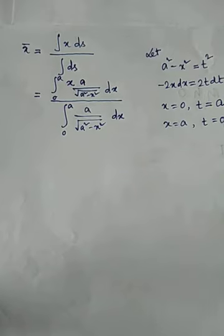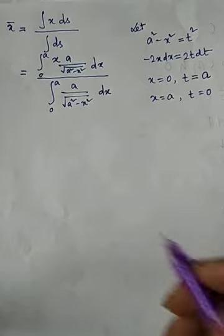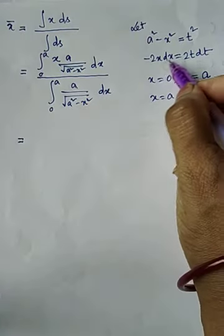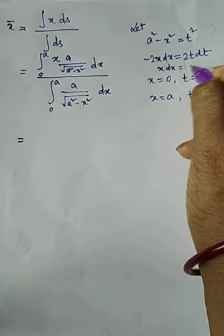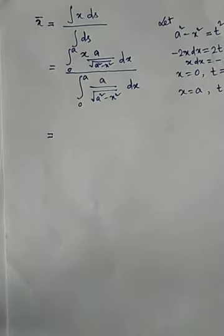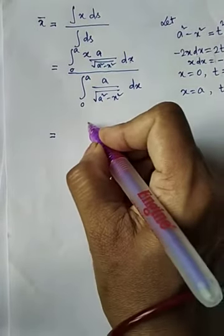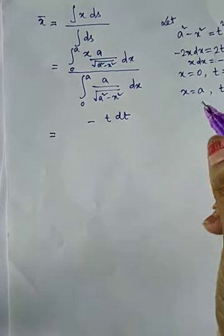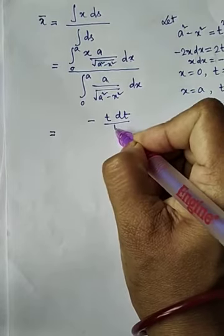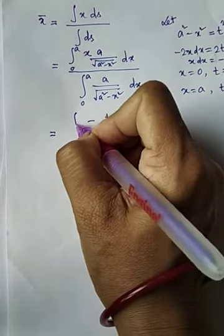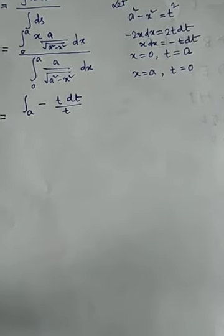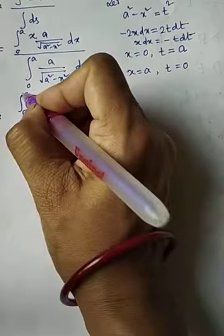After substitution, x dx = −t dt, and √(a² − x²) = t. So the numerator becomes ∫ (−t dt) / t, with limits changing from a to 0. Accounting for the sign change, the limits become 0 to a, and we get ∫dt = [t] from 0 to a = a.